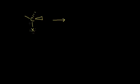I start with an alkyl halide, and notice that this carbon in my alkyl halide is sp3 hybridized. In the first step of the mechanism, the electrons kick off onto my leaving group, which is my halogen. The halogen picks up a lone pair of electrons and gets an extra lone pair, which gives it a negative 1 formal charge.